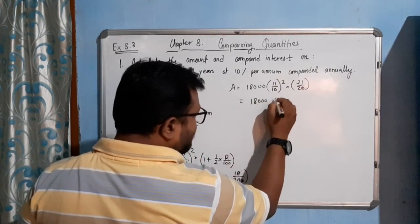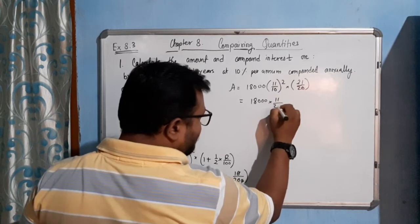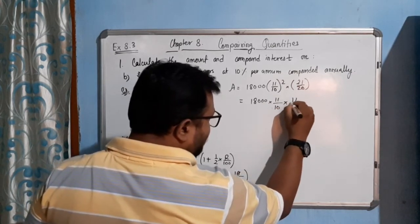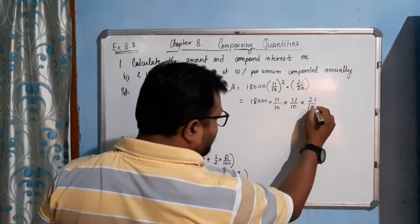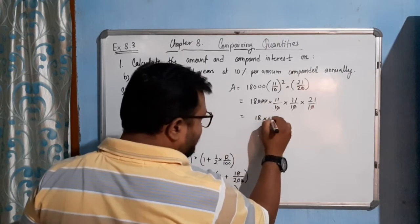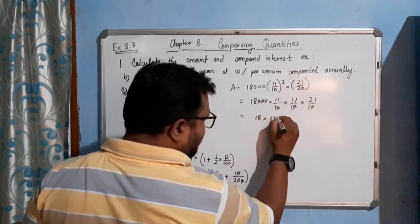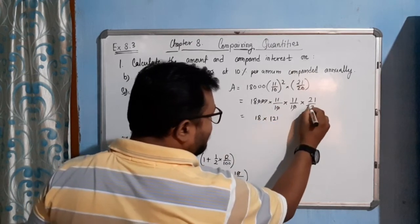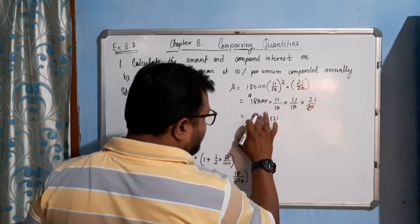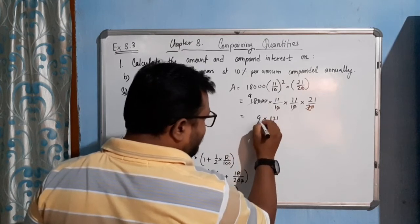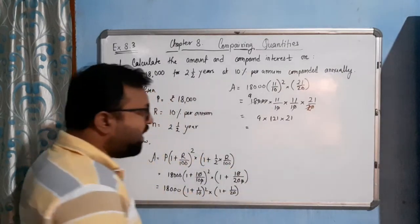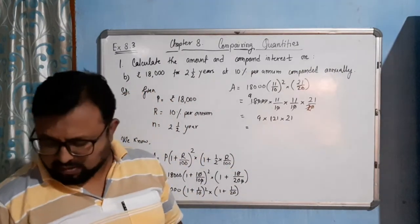18 triple zero, then 11 by 10 into 11 by 10 into 21 by 20. Three zeros cancel out, so it is 18 into 11 and 121. It is 2, 2, 9s here. You will write 9, 1, 21 into 21. I already did the calculation to save time.